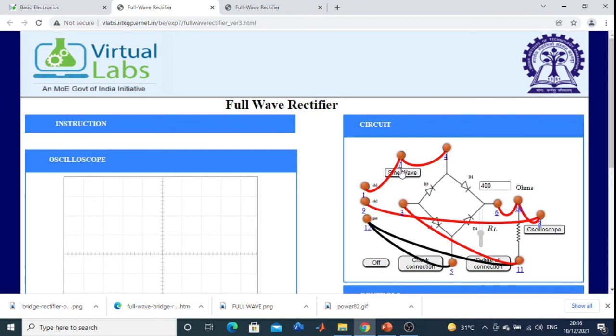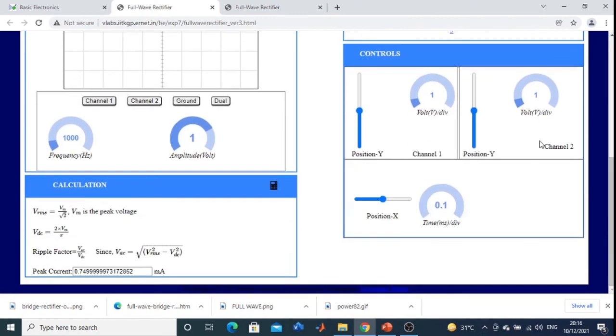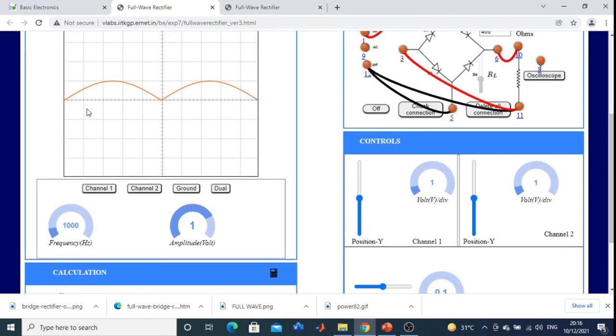Now for input, click on sine wave. This is the input. Click on oscilloscope to get the rectified output. This is the rectified output. This is your channel 1, this is your channel 2 rectified output. This is for dual. Clear students?